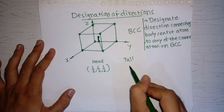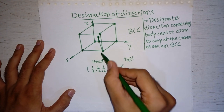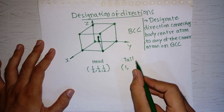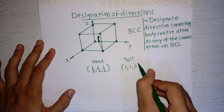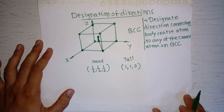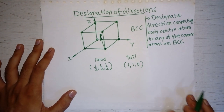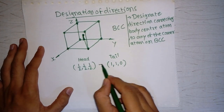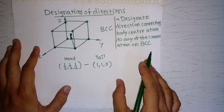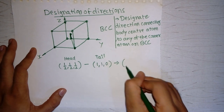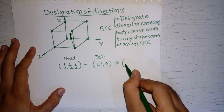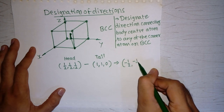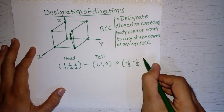The coordinate values of the tail point are 1, 1, and 0. Now we have to subtract the tail from the head. Subtracting, we get: minus one-half, minus one-half, and one-half.